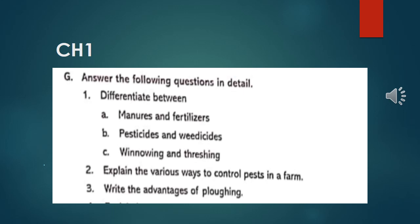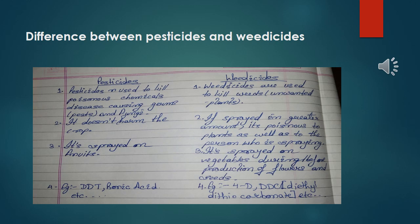Let's do end-of-class Q&A today. I am going to discuss some question answers from our textbook. The first question is: differentiate between manures and fertilizers — that answer I already provided. The second question is: differentiate between pesticide and weedicide, which we will discuss in our next slide. Also, we'll discuss winnowing and threshing. Question number two: explain the various ways to control pests in a farm — that answer we are also going to discuss.